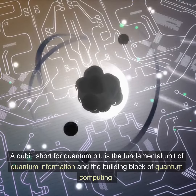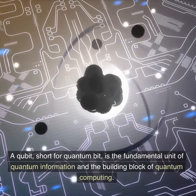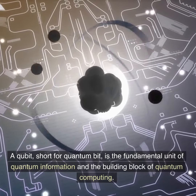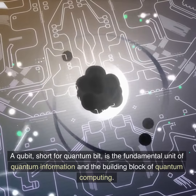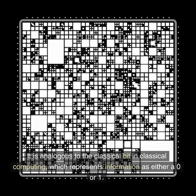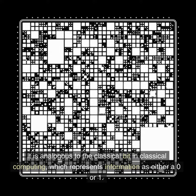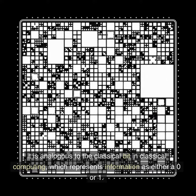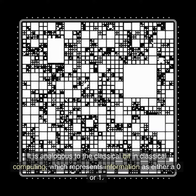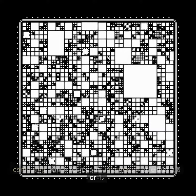A qubit, short for quantum bit, is the fundamental unit of quantum information and the building block of quantum computing. It is analogous to the classical bit in classical computing, which represents information as either a zero or one.